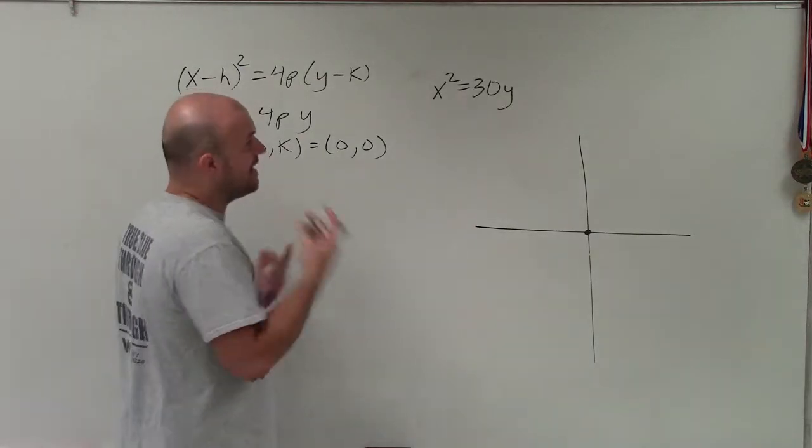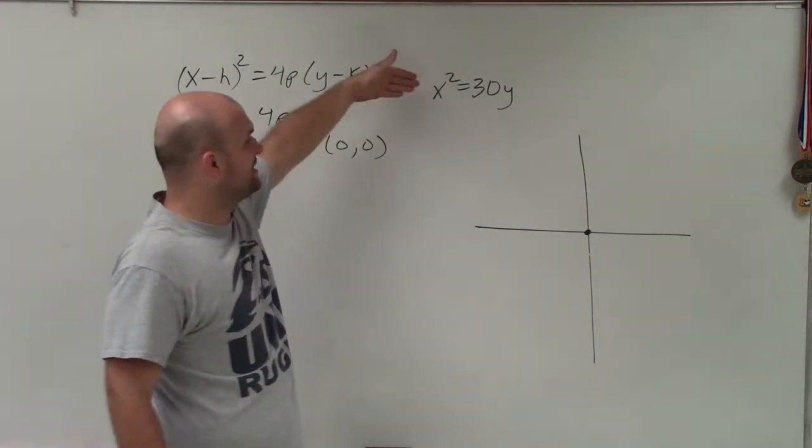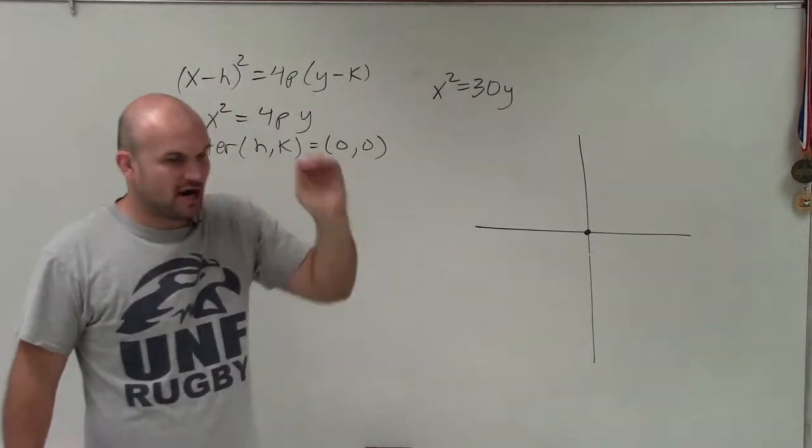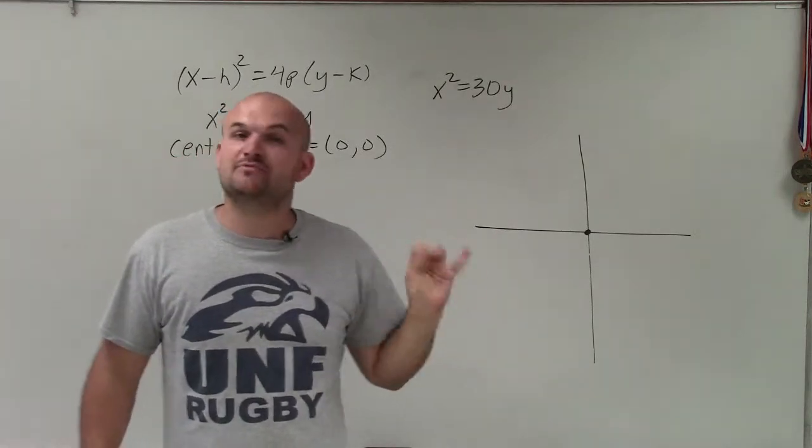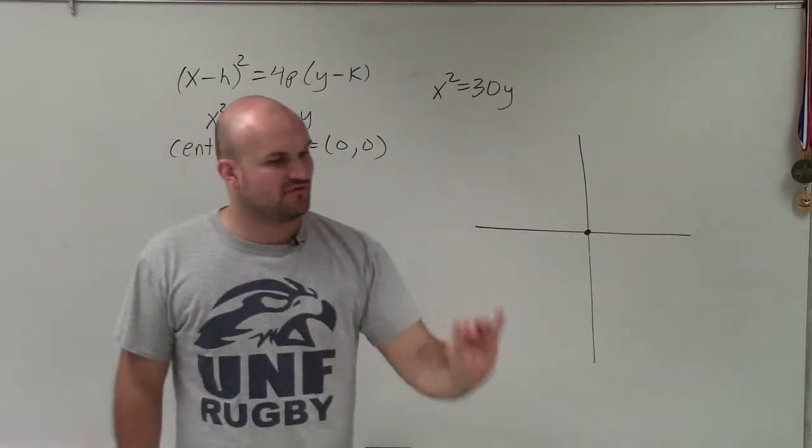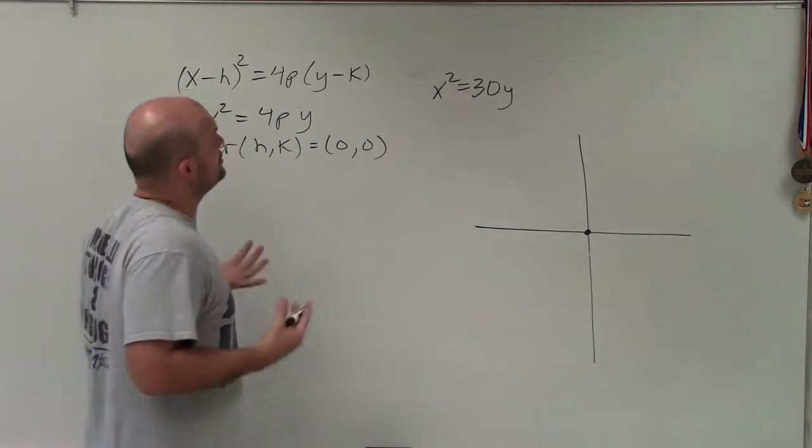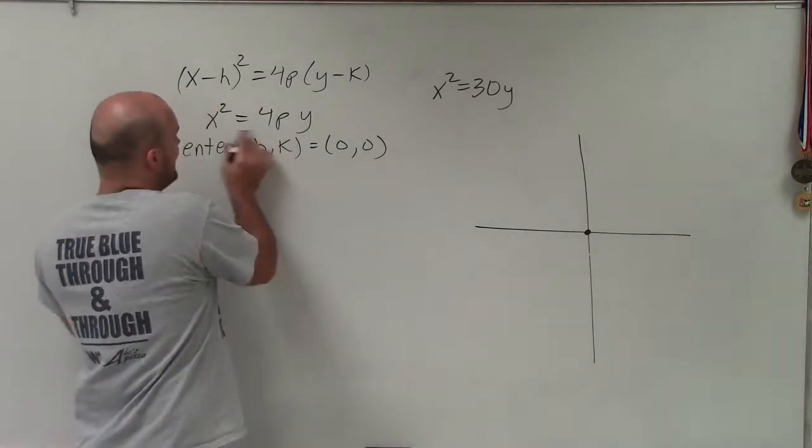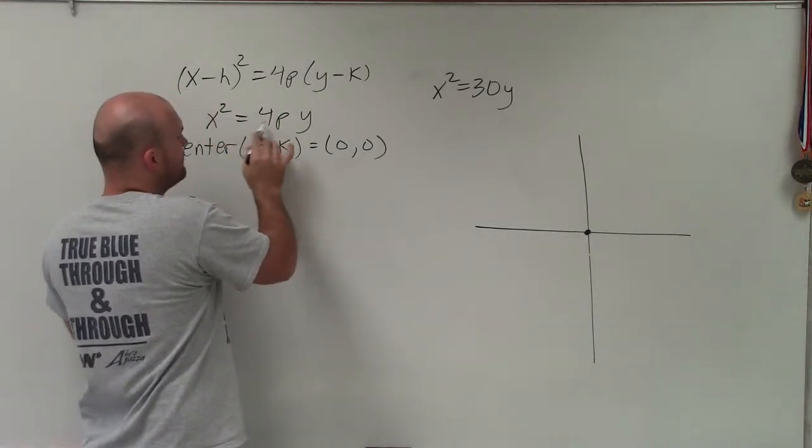And that's all dependent on—obviously you can look at the a if we were to write this in standard form—but in our case, it's going to be dependent on the value of p, where p is the distance from the vertex to the focus. So we need to determine what p is. If I look at this equation, x² = 4p·y.